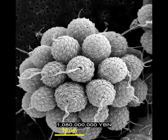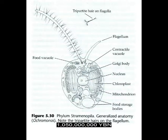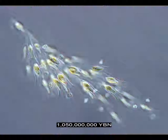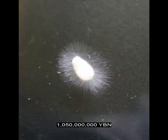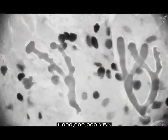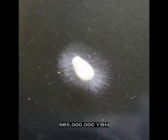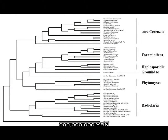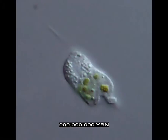Protists straminopiles — also called heteroconts — ancestor of all brown and golden algae, diatoms, and oomycota. Diplontic life cycle: organism is predominantly diploid and mitosis in the haploid phase does not occur. Protists Mesomycetazoa, also called DRIPs. Protists oomycota — water molds. Protists Rhizaria — ancestor of all radiolaria, foraminifera, and cercozoa.